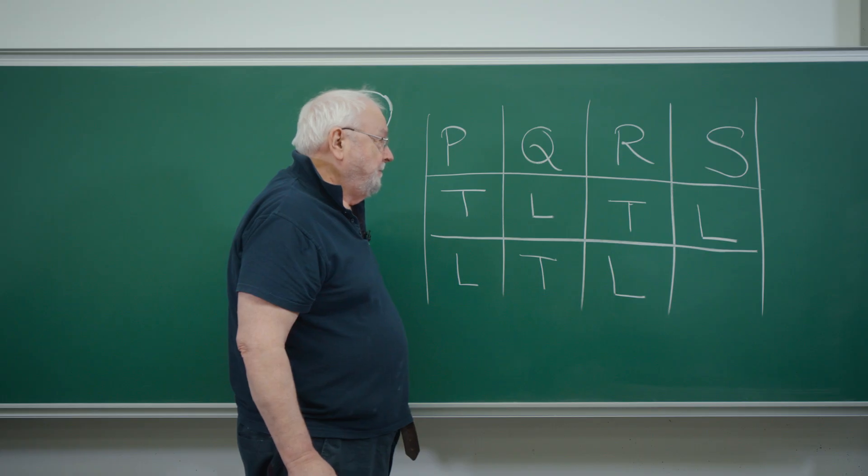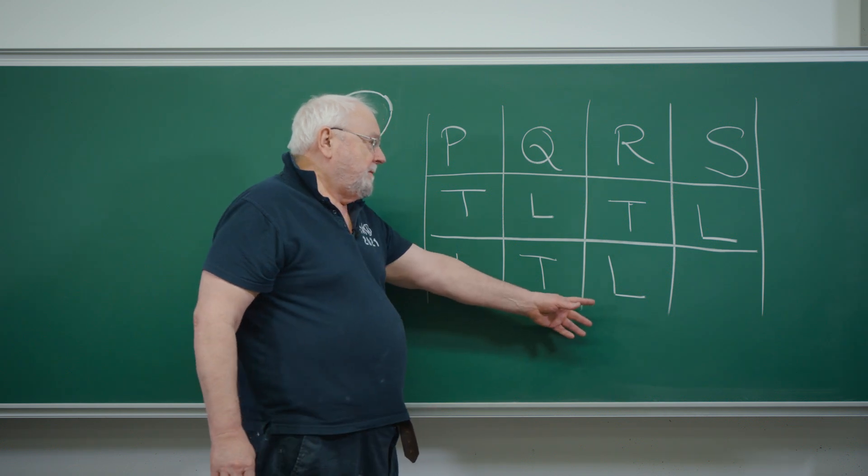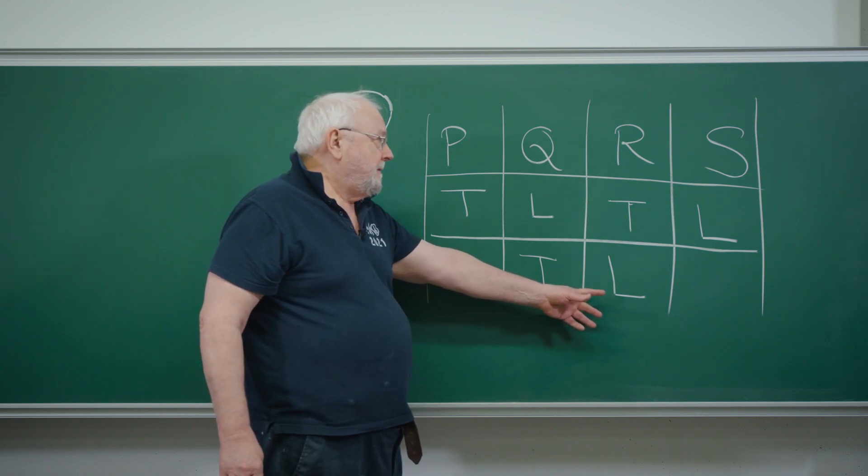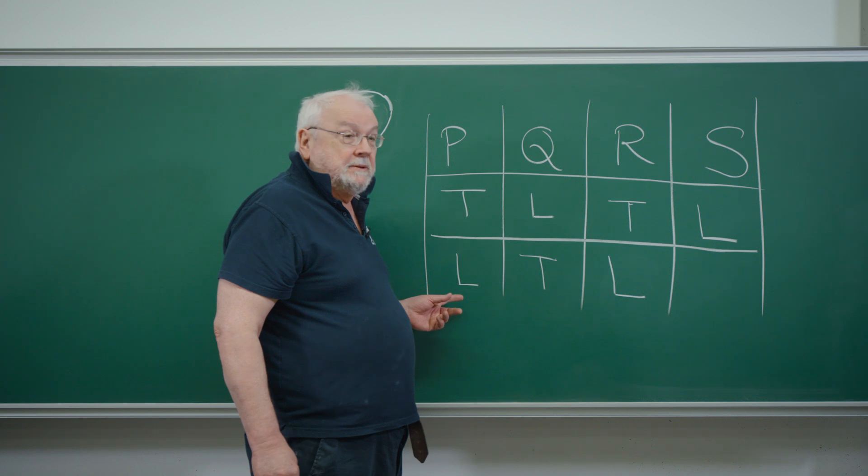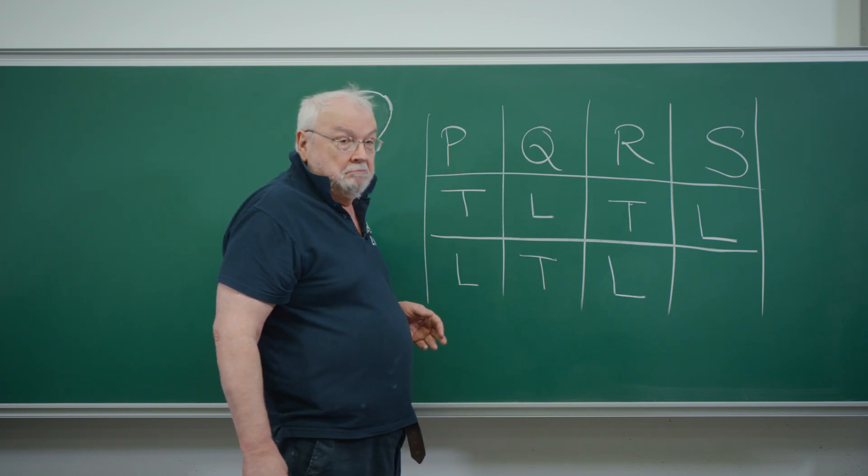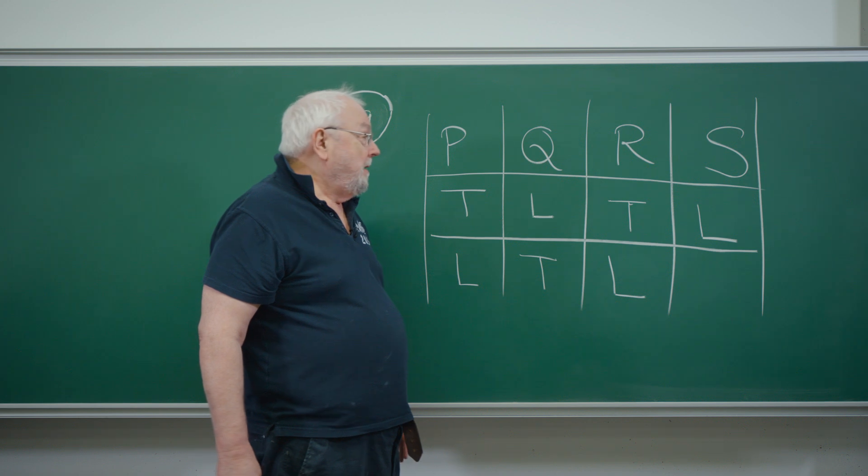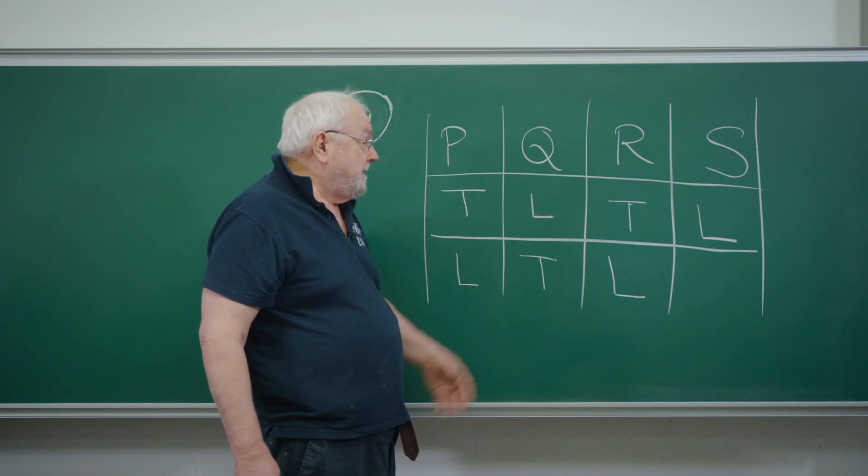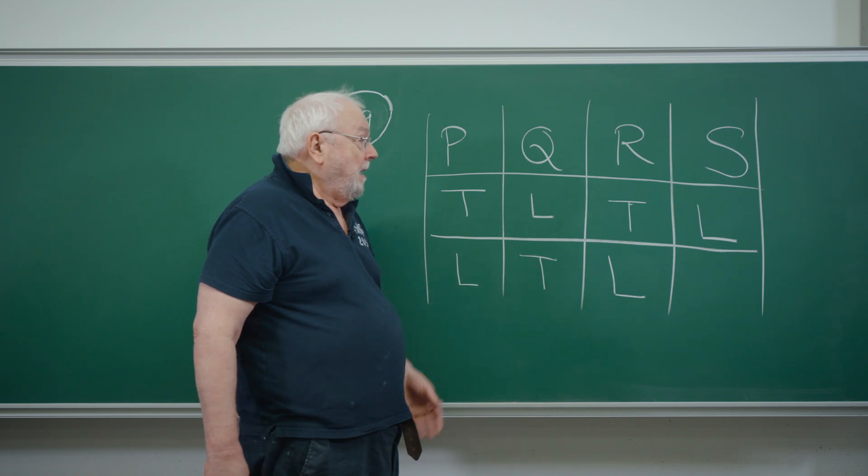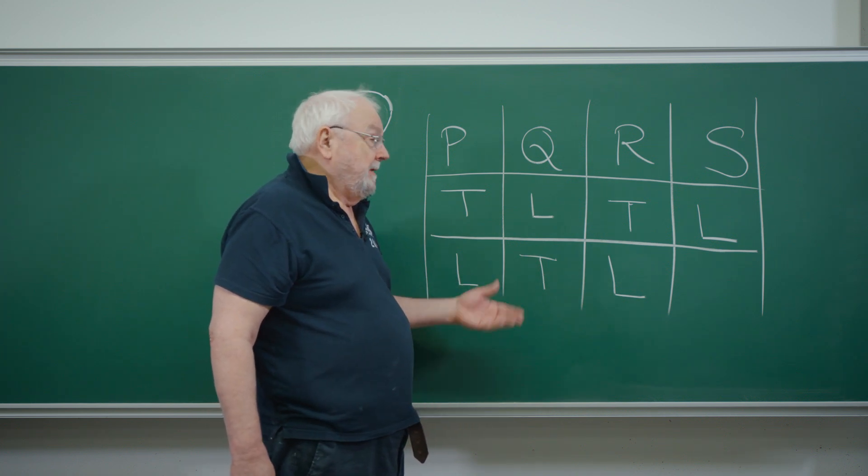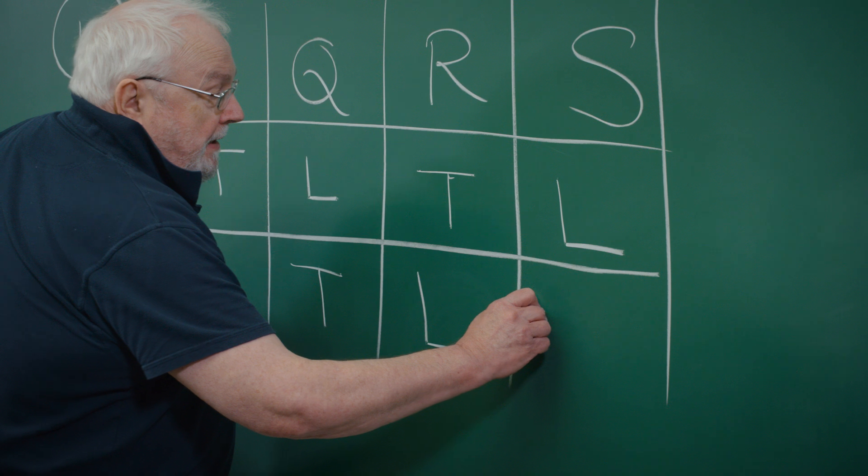Does it make sense? R says that P is a truth-teller. But they're not. So yeah, that fits with R being a liar. S looks at this lot and says that of P, Q and R, two of them are liars. That's right. So S must be a truth-teller.